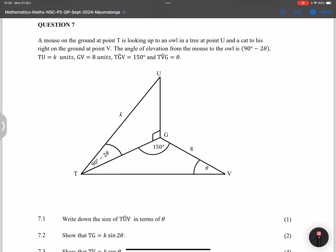Right, they say the angle of elevation from the mouse to the owl is 90 minus 2θ and TU is equal to k units. GV is 8 units and TGV is 150 and TVG is θ.